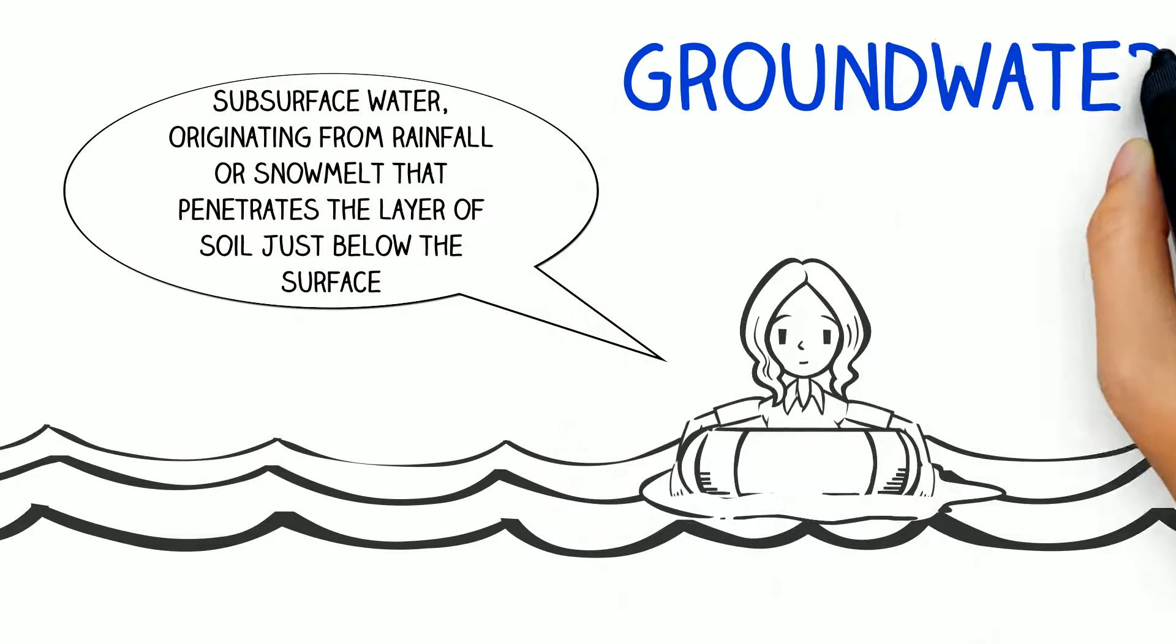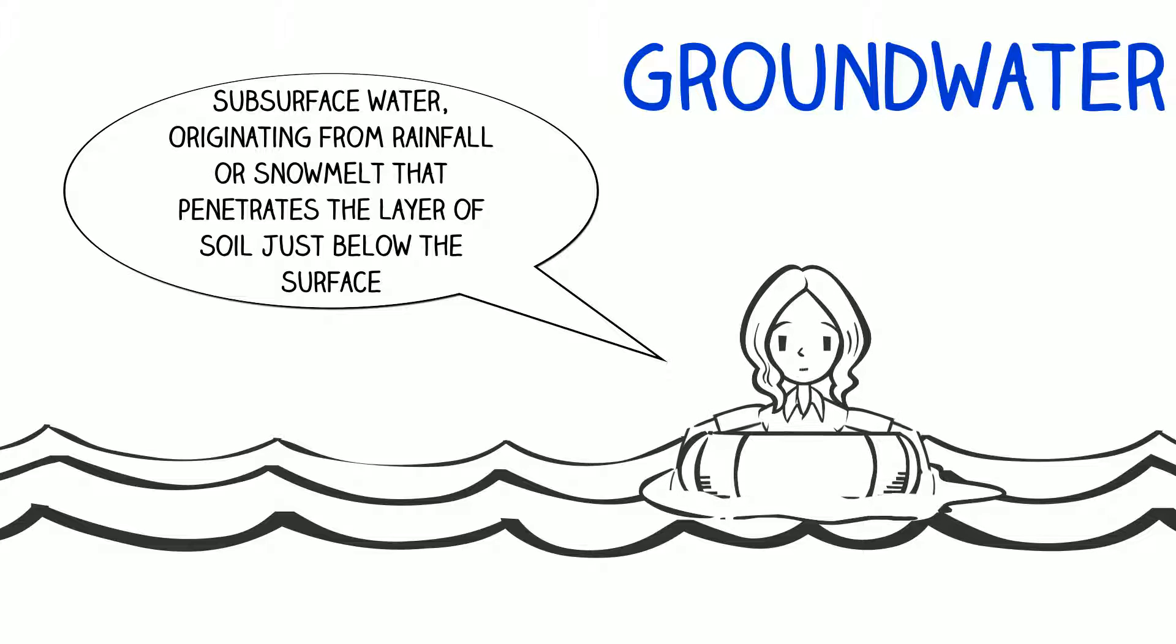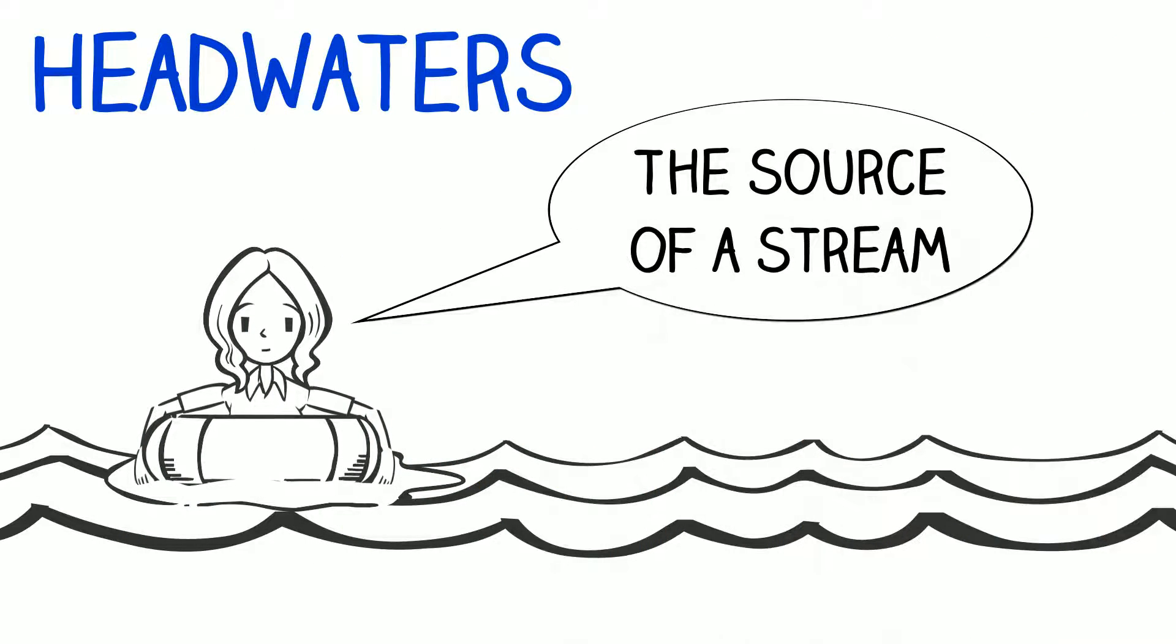Groundwater is subsurface water originating from rainfall or snowmelt that penetrates the layer of soil just below the surface. Headwaters are the source of a stream.